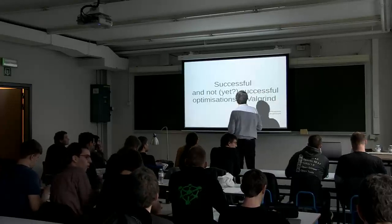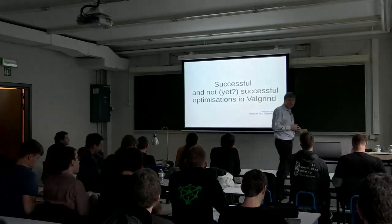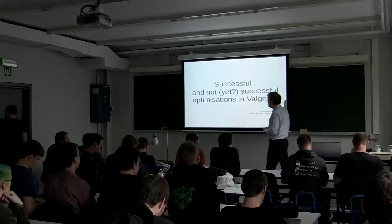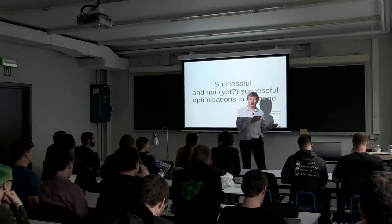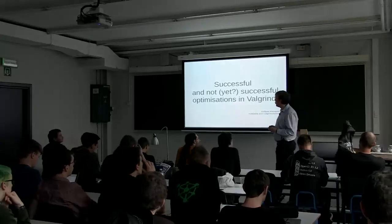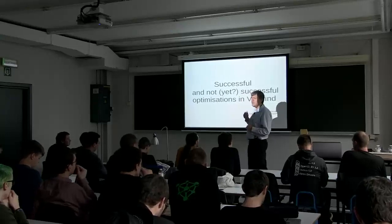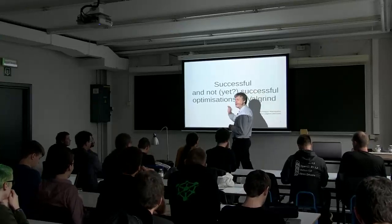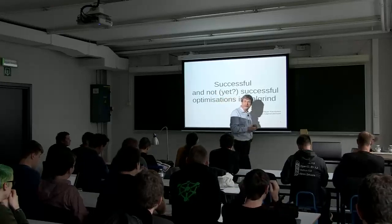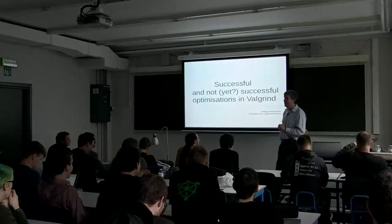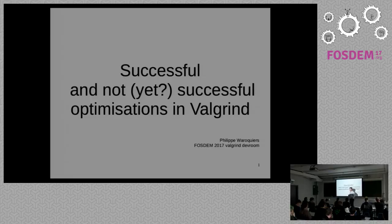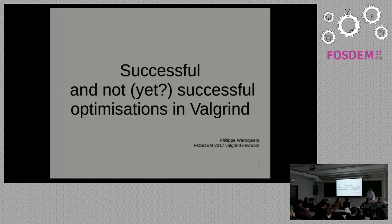This talk is about successful and not yet successful optimization in Valgrind. The first question you might ask is how do we classify successful and not successful. A colleague said the successful is what I'm writing and the not successful are what others are writing. In this case that's not the classification I'll use — I'll speak about two optimizations I did, one committed to the SVN repository and the other not yet committed.